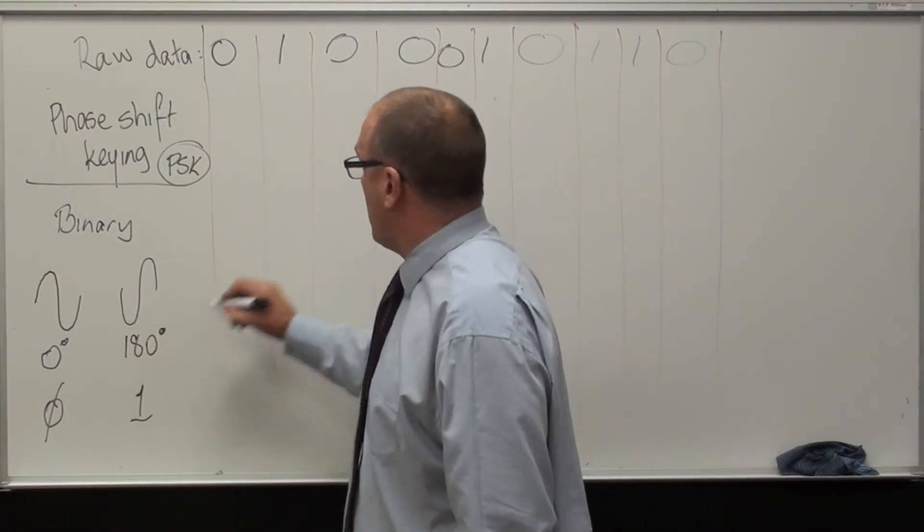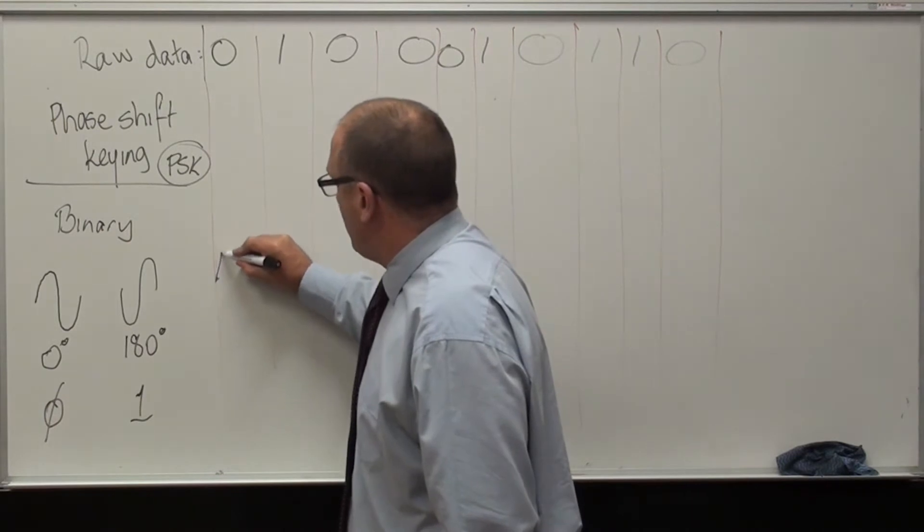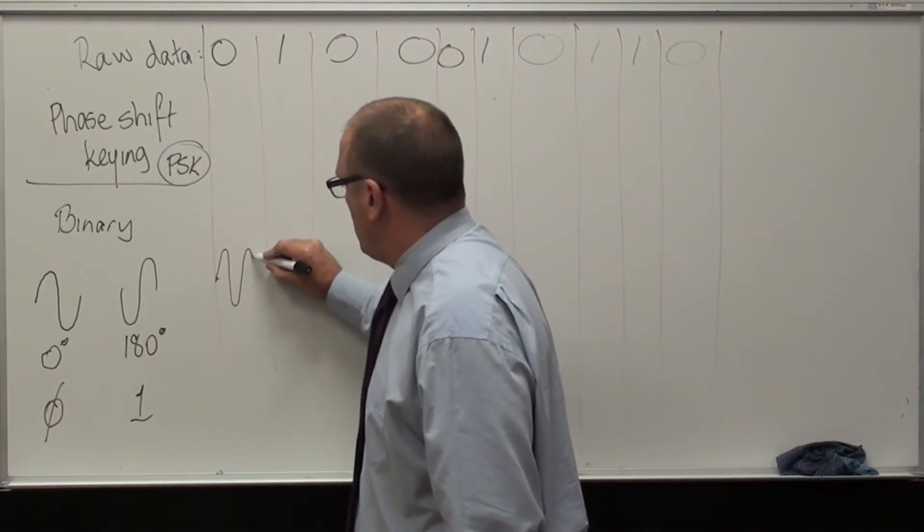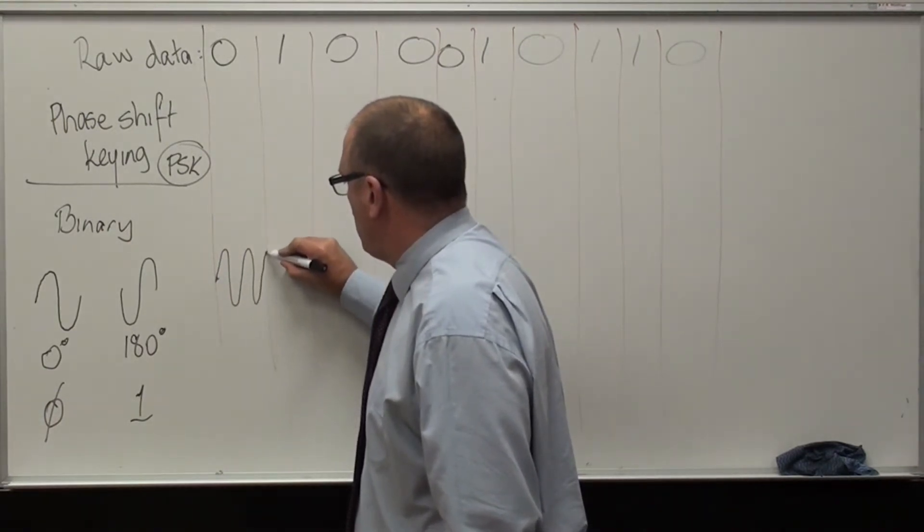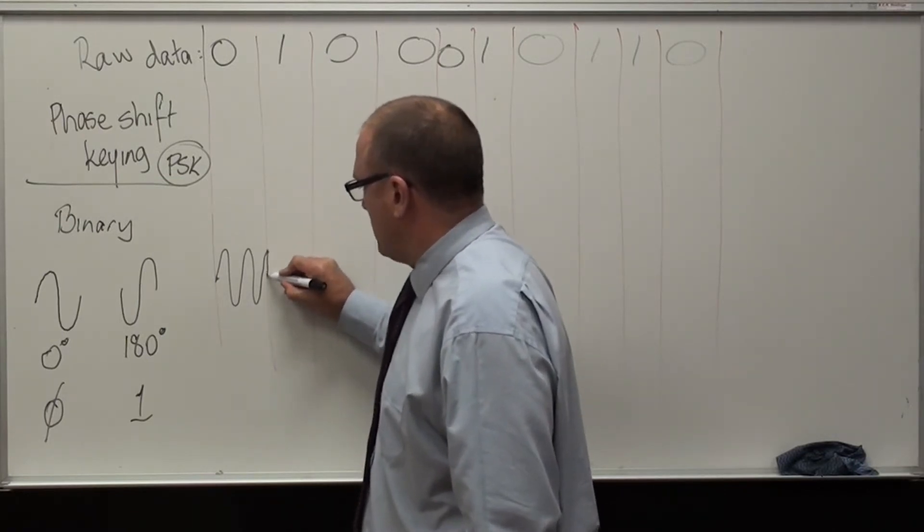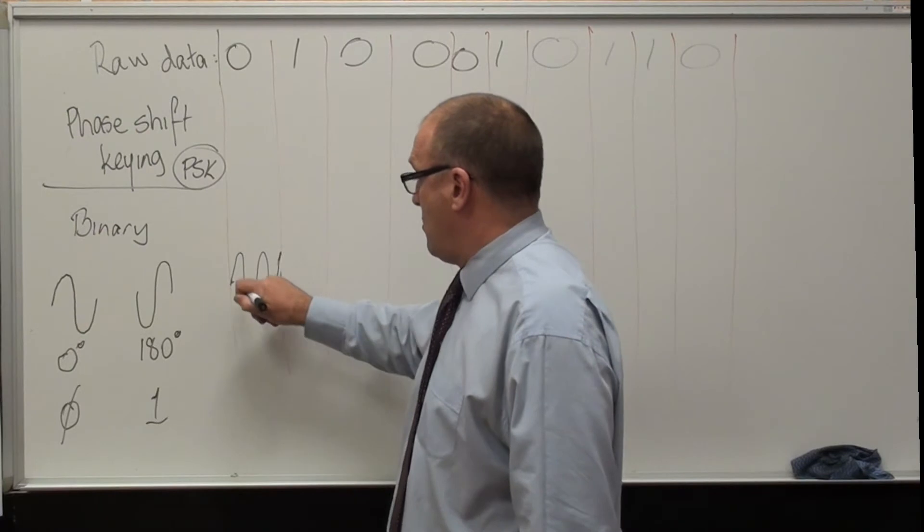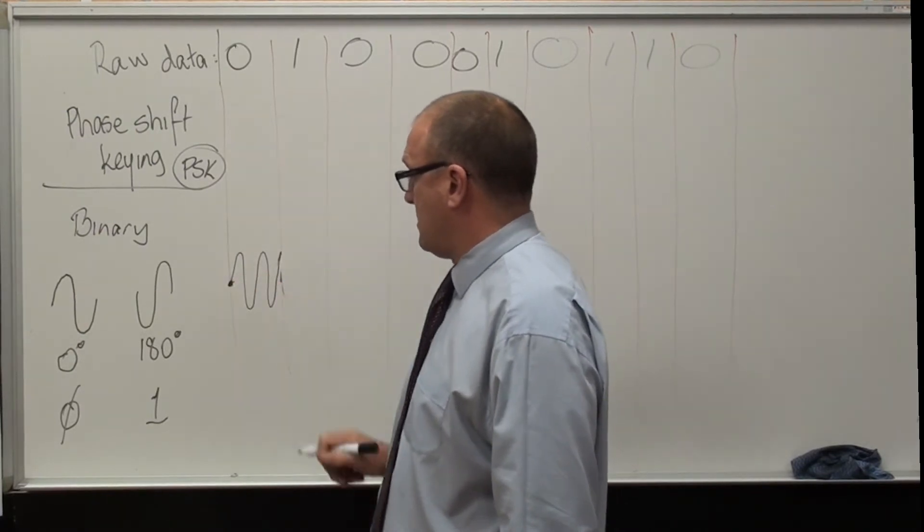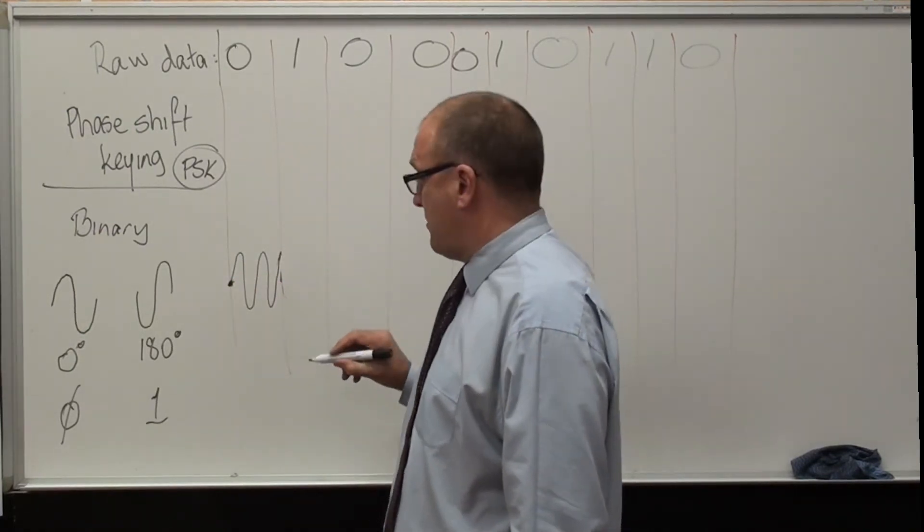So let's now go through an example. A zero is our first waveform, then a one. So the first one is a zero where the phase starts at zero degrees.